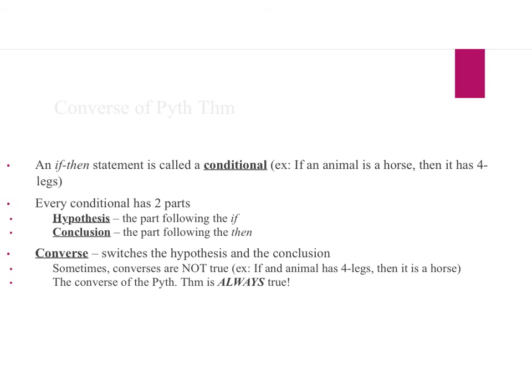When we're dealing with the Pythagorean Theorem, we also have something called the converse of the Pythagorean Theorem. The converse switches what we call the hypothesis and the conclusion. When we have an if-then statement, this is what we call a conditional.